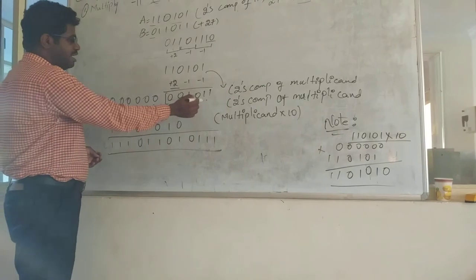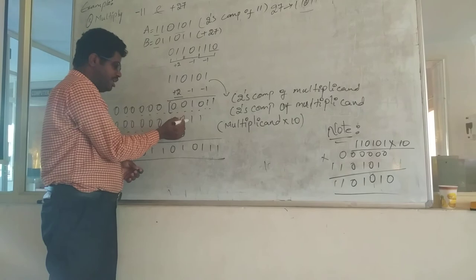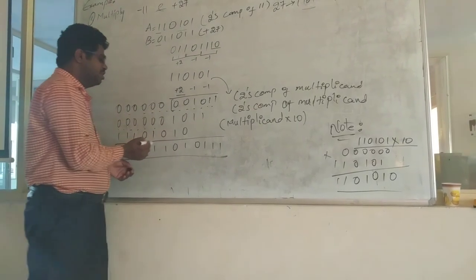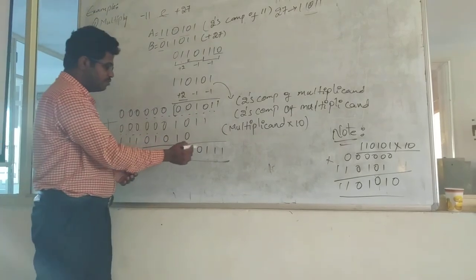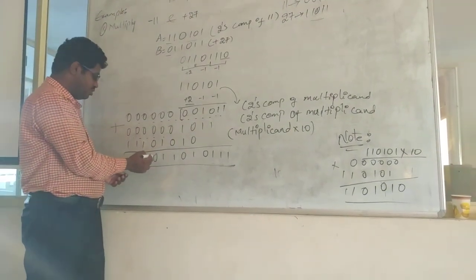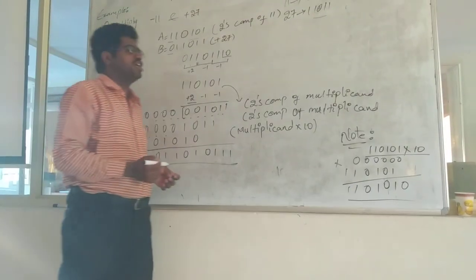So at last after this operations will get the answer of 111010101011. It is equivalent to value of minus 297.